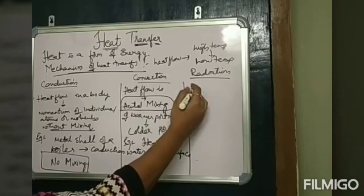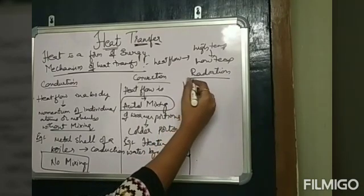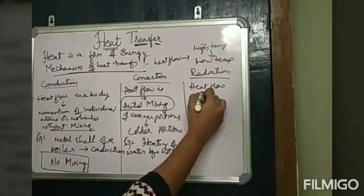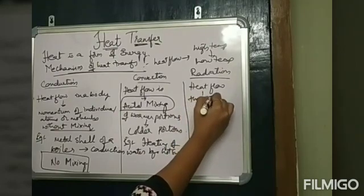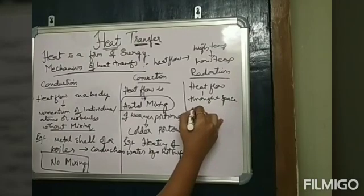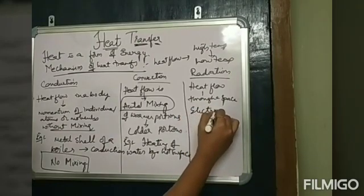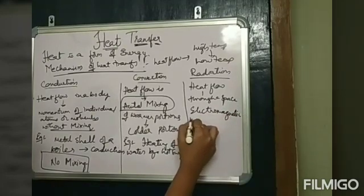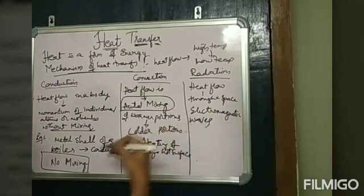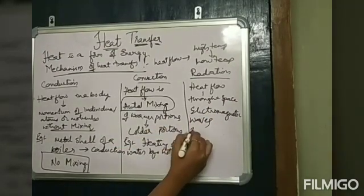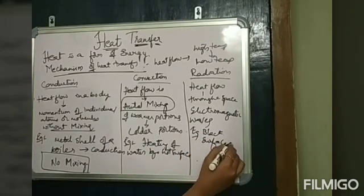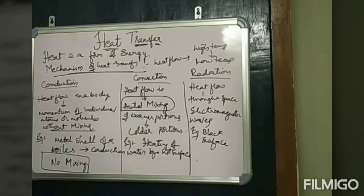Radiation: heat flows through space by means of electromagnetic waves. An example is a black surface, which absorbs most of the radiation that reaches it.